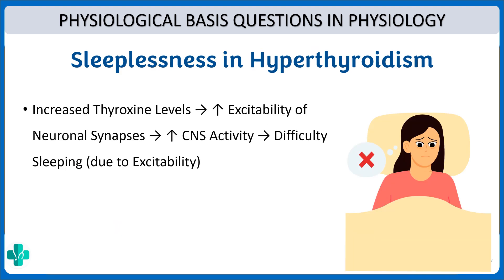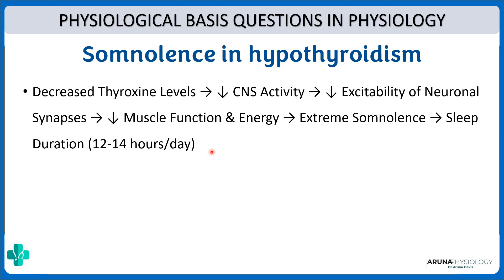Next, why is there sleeplessness in hyperthyroidism? That again is due to increased excitability of neural synapses, which leads to increased CNS activity and thereby difficulty in sleeping. But what happens in hypothyroidism? There will be somnolence — a long duration of sleep. That is because with decreased thyroxine levels there will be decreased CNS activity, decreased excitability, and even muscle function would be decreased, so the patient will complain of sleeping for a long duration like 12 to 14 hours a day.